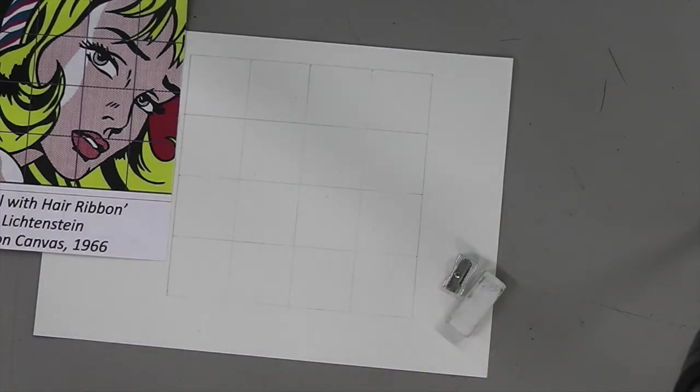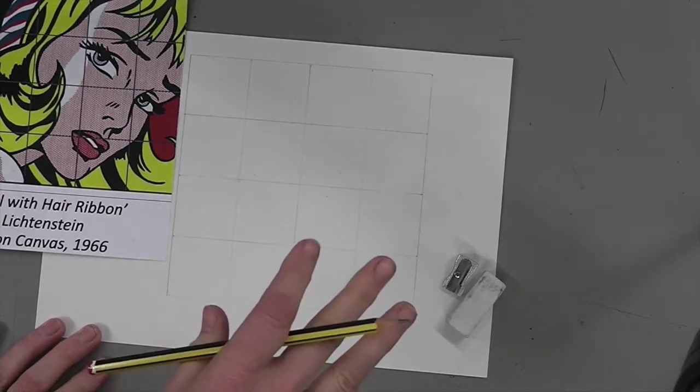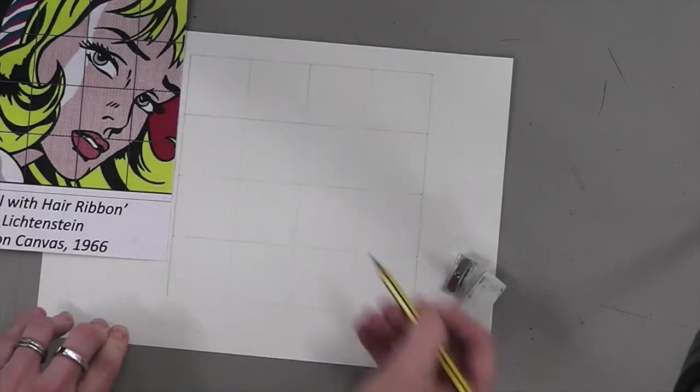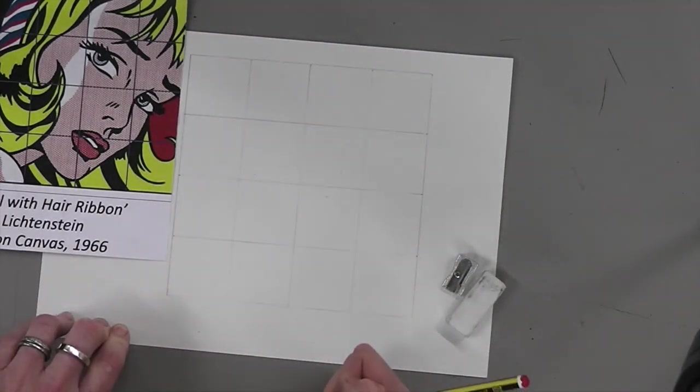You're going to need a pencil, rubber, and a sharpener today. Please make sure you have those pieces of equipment. Now when I start to draw, I generally start from the top left and work to the top right. That stops me smudging my work as I go.